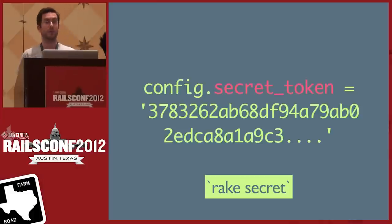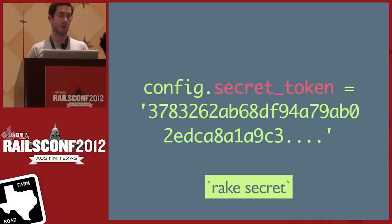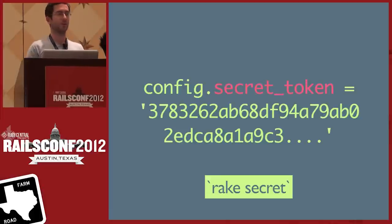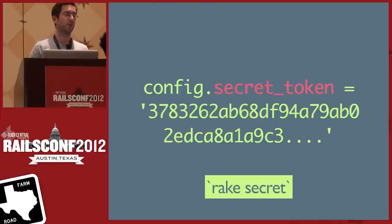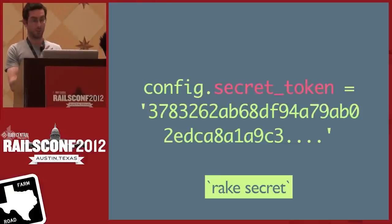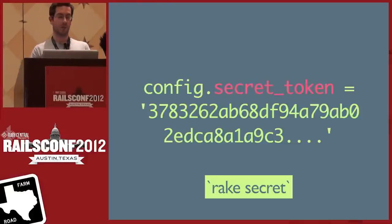I'm going to focus on the cookie store since it's the default. Its security is based on a secret token set in the app configuration — it's only as secure as that token. You can run rake secret to generate a suitable token and then set it in the config. Also, if you've got multiple Rails apps, make sure the secret token is different for each one, otherwise you'll run into issues.